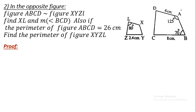From the figure we can find the following data: measure of angle A equals 125 degrees, measure of angle B equals 70 degrees, measure of angle L in the second polygon equals 80 degrees, AD equals 6 centimeters, BC equals 8 centimeters, and ZY equals 2.4 centimeters.